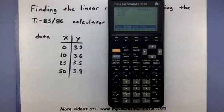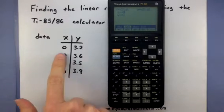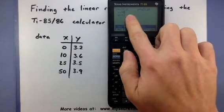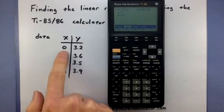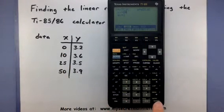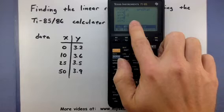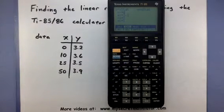When we get to this screen, we can list out all of our data points as pairs. X1 is going to be 0, Enter, and Y1 will be 3.2. When you press Enter, it drops down and you get an option for X2 and Y2. Let's do 10, Enter, 3.6, Enter.